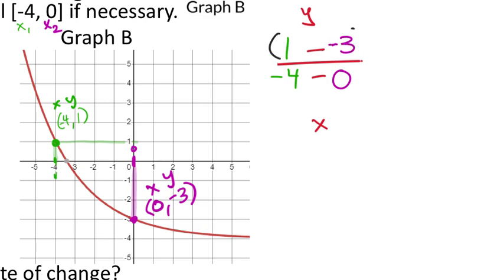When I put this in the calculator with parentheses, I get negative 1. That's my rate of change for graph B. We also have the y-intercept at (0, -3), and now we're ready to compare the two graphs.